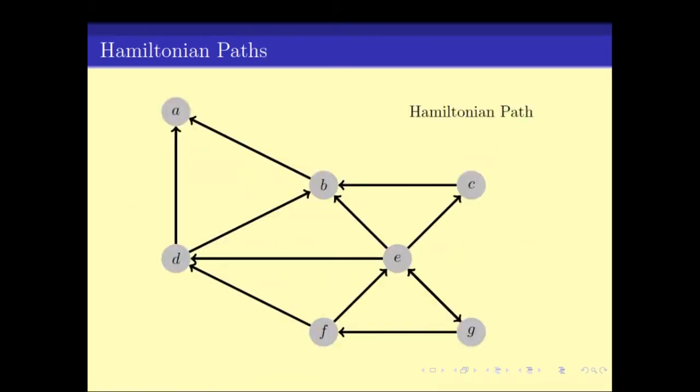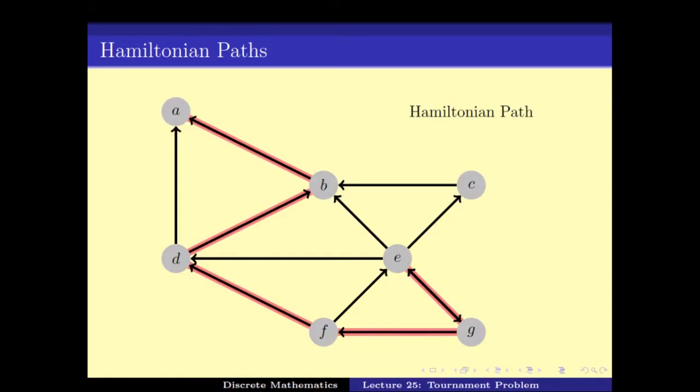In this directed graph, the path E, G, F, D, B, A is a path but it is not a Hamiltonian path because it does not touch every vertex — for example, it does not touch vertex C. You can convince yourself by playing with this graph that it does not have a Hamiltonian path.